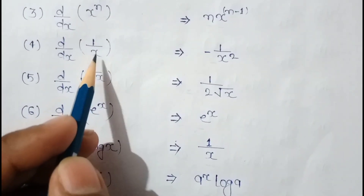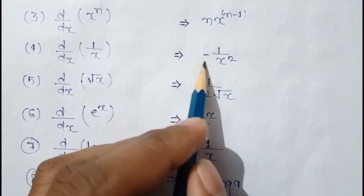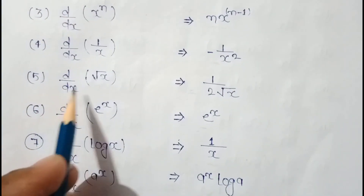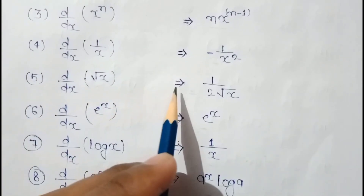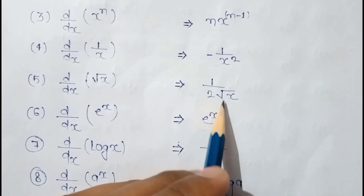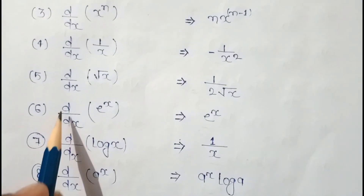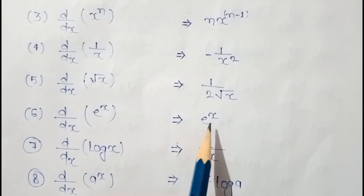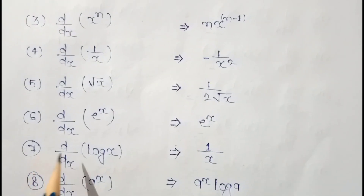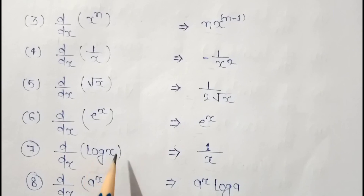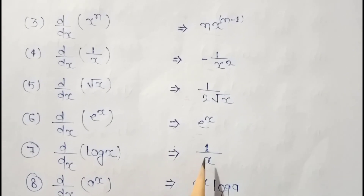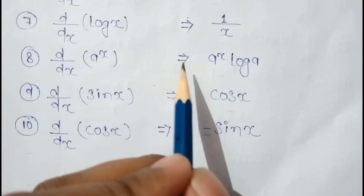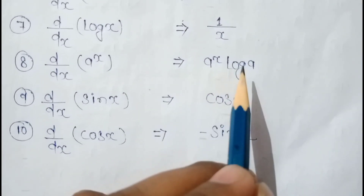d by dx of 1 upon x is equal to minus 1 upon x square. d by dx of root x is equal to 1 upon 2 root x. d by dx of e to the power x is equal to e to the power x. d by dx of log x is equal to 1 upon x. d by dx of a to the power x is equal to a to the power x into log a.